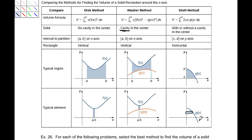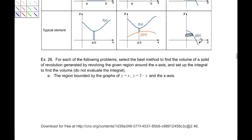The last thing in this section is to determine the best method to find the volume of a solid of revolution for three cases — we'll sketch and set up the integral only, not evaluate. The region bounded by y equals x and y equals 2 minus x, and the x-axis, revolving around the x-axis. These cross at x equals 0 and x equals 2, so our region is that triangular area.